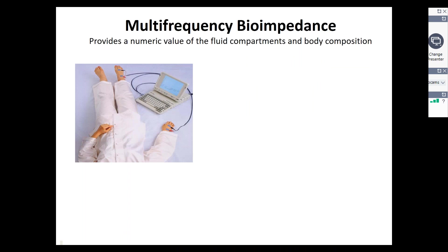This is where the use of other devices comes in handy. One most commonly used and studied in clinical research is the bioimpedance device, which provides numeric values of fluid compartments. For example, it can tell you that of a body weight of 60 kilograms, 40 liters is total body water, and of that, maybe 25 liters is in the extracellular water compartment. It's relatively easy to undertake these measurements.